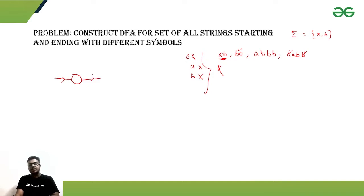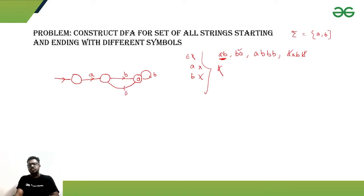The initial state won't be a final state because null is not accepted. If we are starting with 'a', we need 'b' as the last symbol for the string to be accepted. If the string gets multiple 'b's it will be accepted, but if it gets an 'a', it should come back to the intermediate state, because the last symbol must be 'b'.